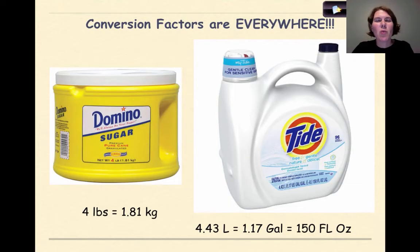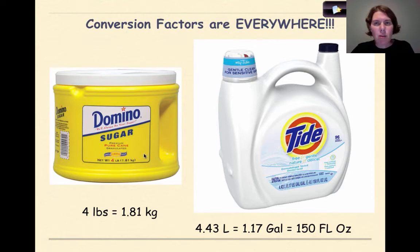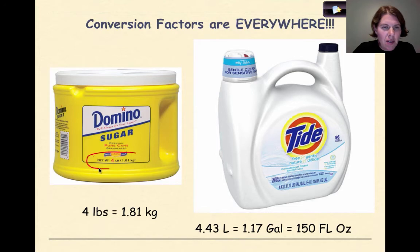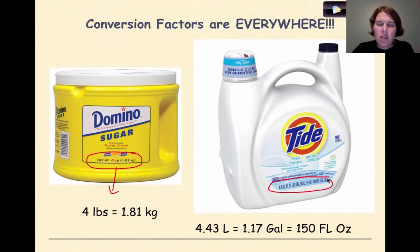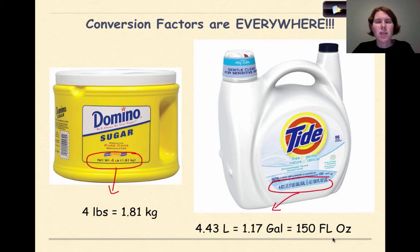Conversion factors are everywhere. On every single one of these products — a Dasani water bottle, Reese's peanut butter cups, this big vat of Domino sugar, and this bottle of Tide Free & Gentle detergent — they have conversion factors on them. For example, on this container it says four pounds is equal to 1.81 kilograms. And on the detergent, 4.43 liters is equal to 1.17 gallons, which equals 150 fluid ounces. The Federal Trade Commission requires that every product list both United States Standard Units and metric units.